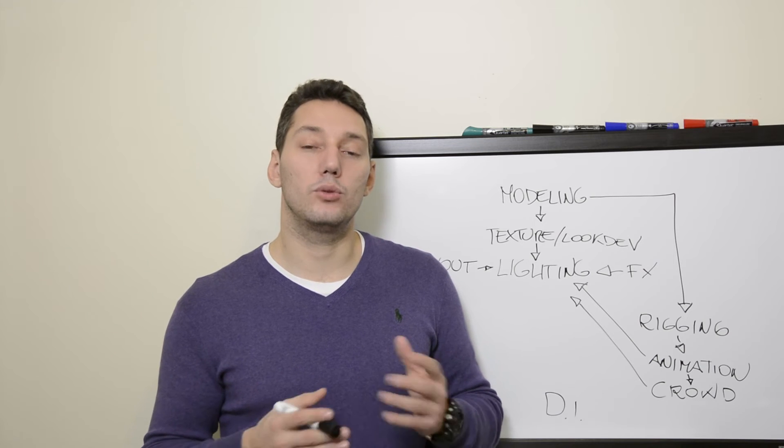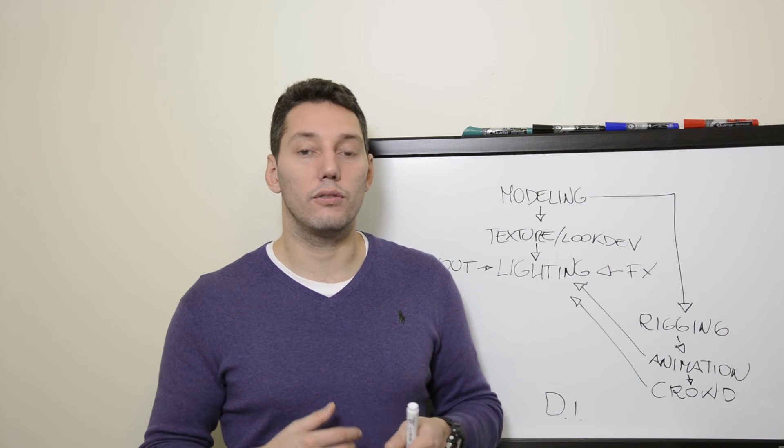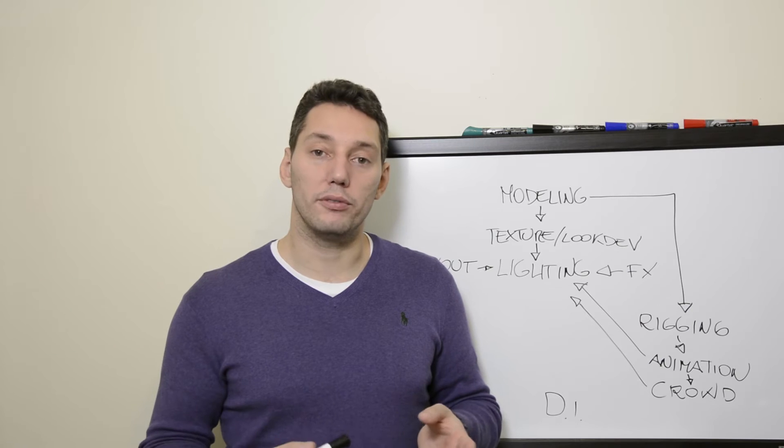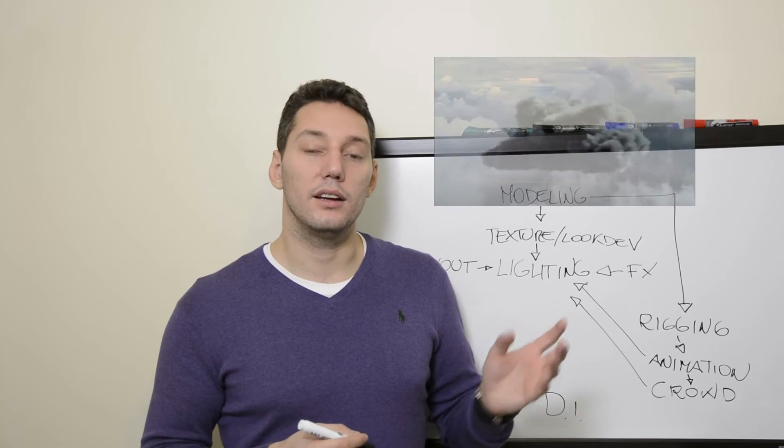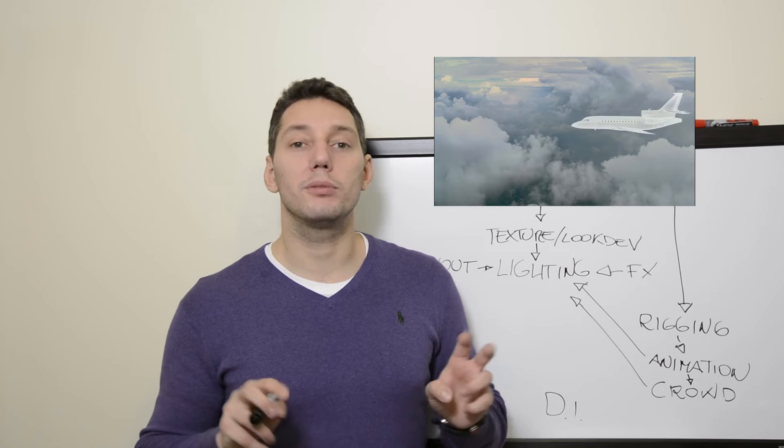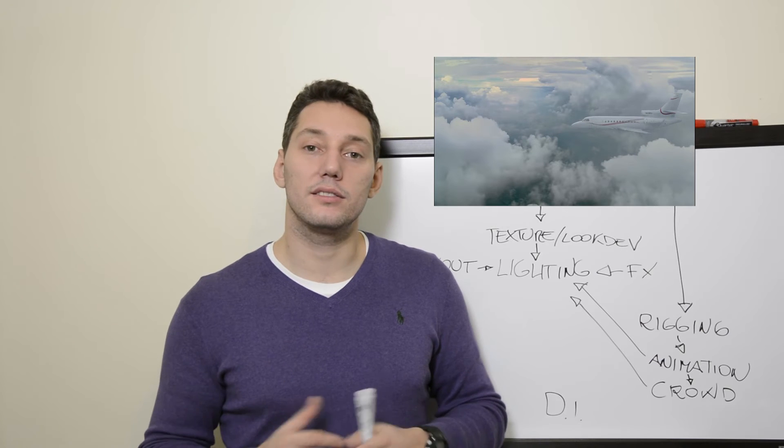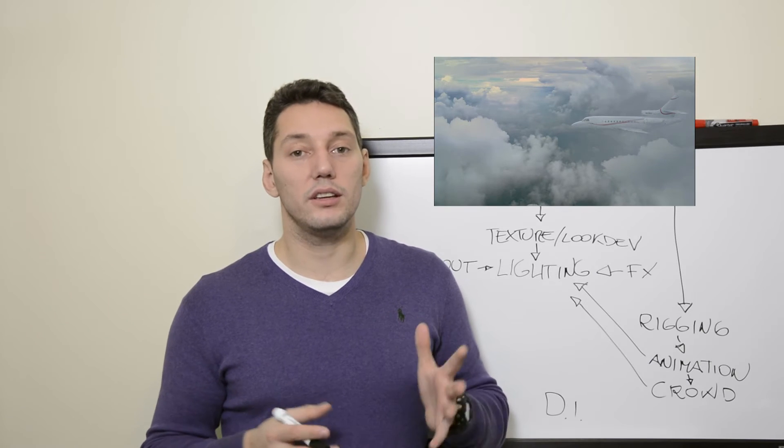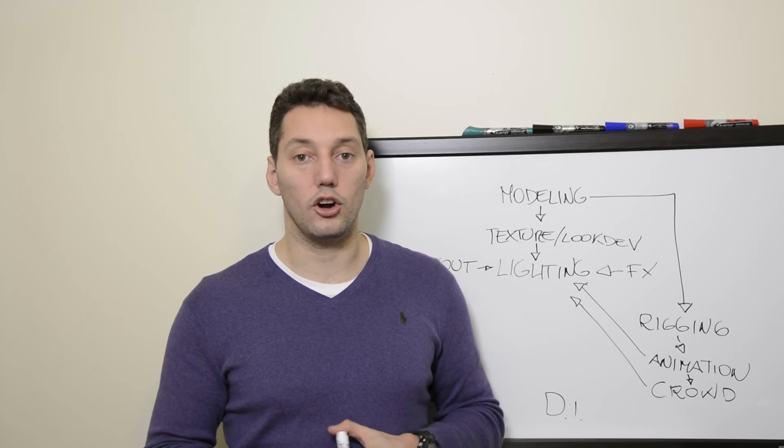The compositing department has tweaks on the lighting renders and also adds a lot of elements on top of the plate, like for example, smoke that is not as complex to be given to the effects departments. They can add it in comp, comp states for compositing, or for example, dust or a lot of the small things that basically increase the realism of the image are done by the comp department.